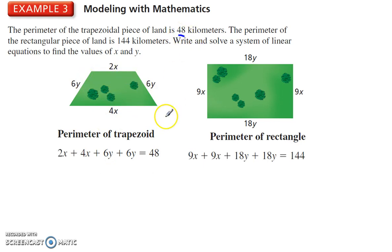So it equals 48 kilometers. This one, all sides added up, equals 144. Simplify, and I get this expression: 6x + 12y = 48, and 18x + 36y = 144. Then I can set that up.